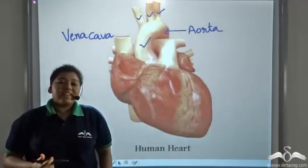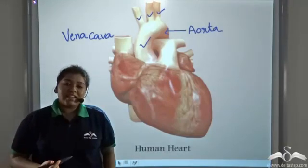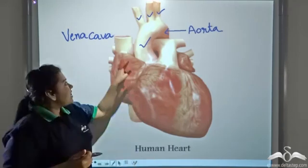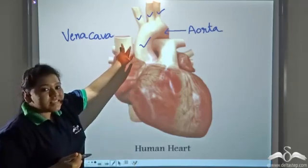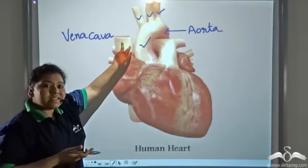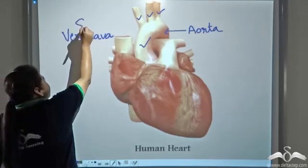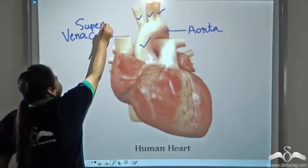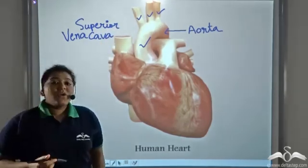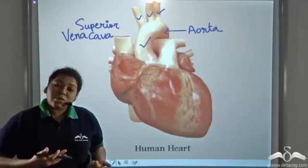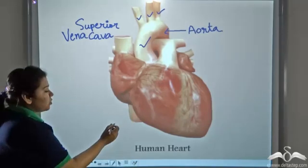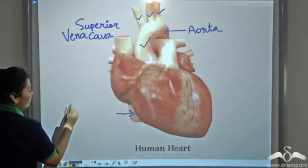Now there are many veins present in our body. The veins present in the upper half of the body drain into this pipe, which is known as the superior Vena Cava — superior means upper. And all the veins present in the lower half of the body drain into this pipe, which is known as the inferior Vena Cava.